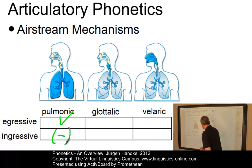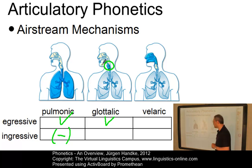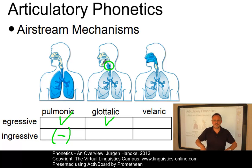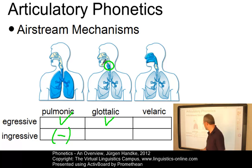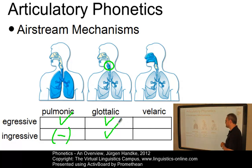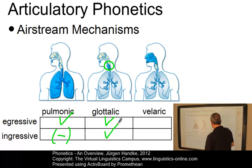The glottalic egressive airstream, which is produced here in the larynx, exists in many languages. It can be used egressively in sounds such as 'ah' or 'ta,' and it can be used ingressively in sounds like 'ah' or 'ga.' So here we have both the ingressive and egressive glottalic airstream, coming from the glottis.